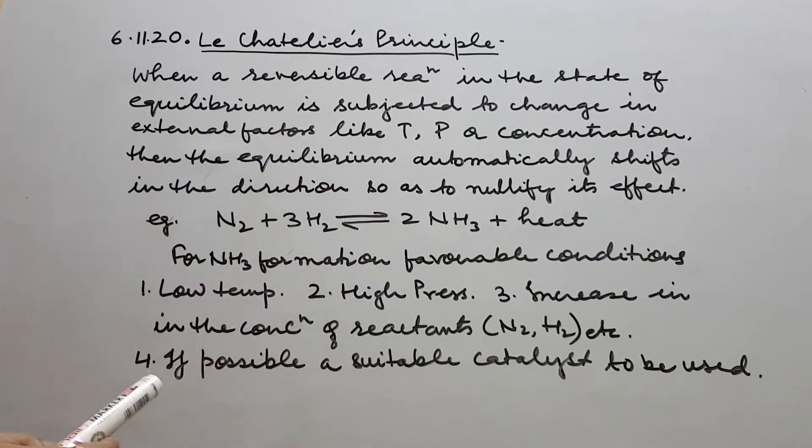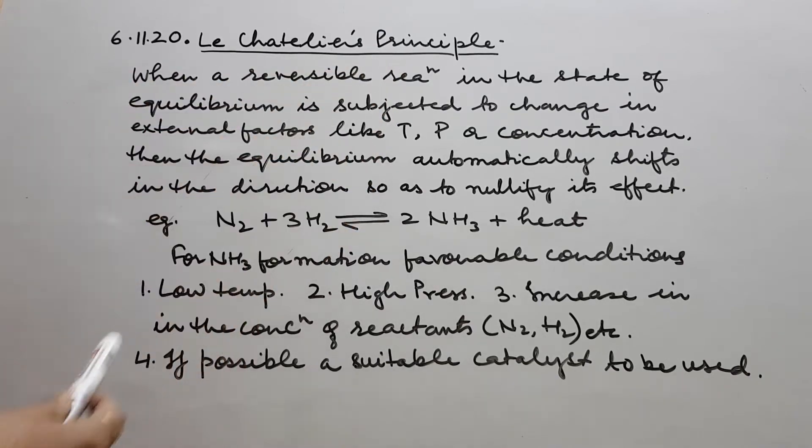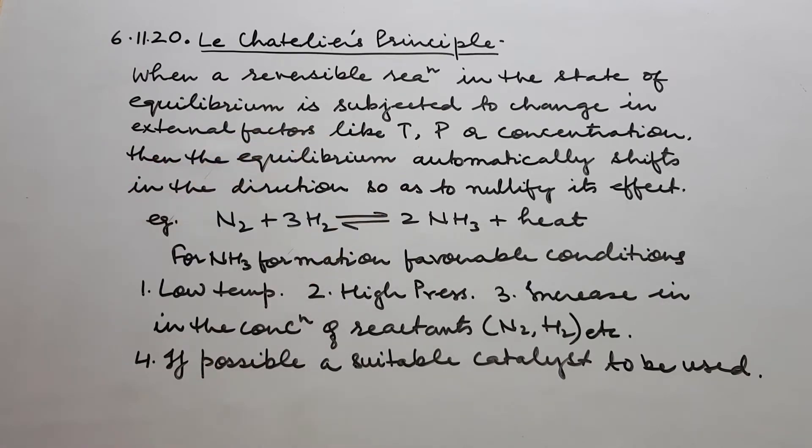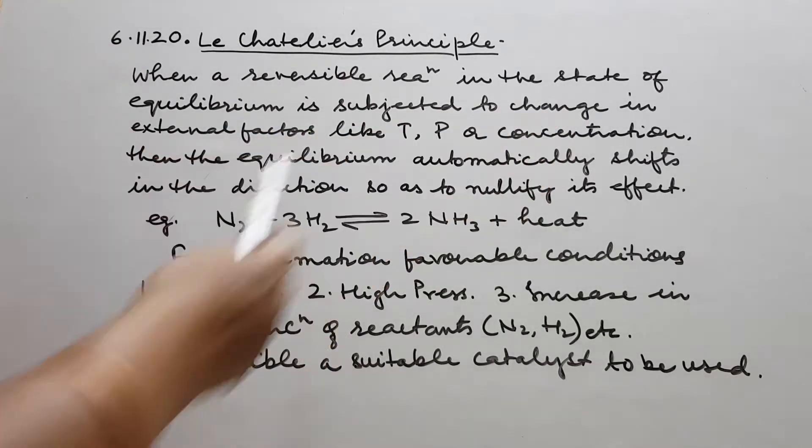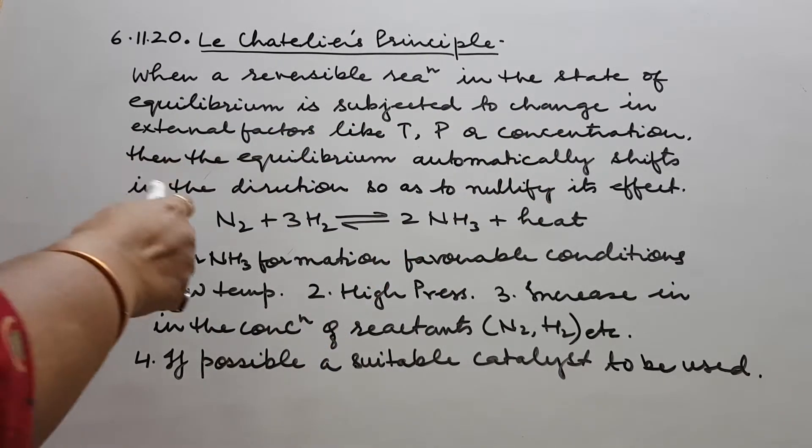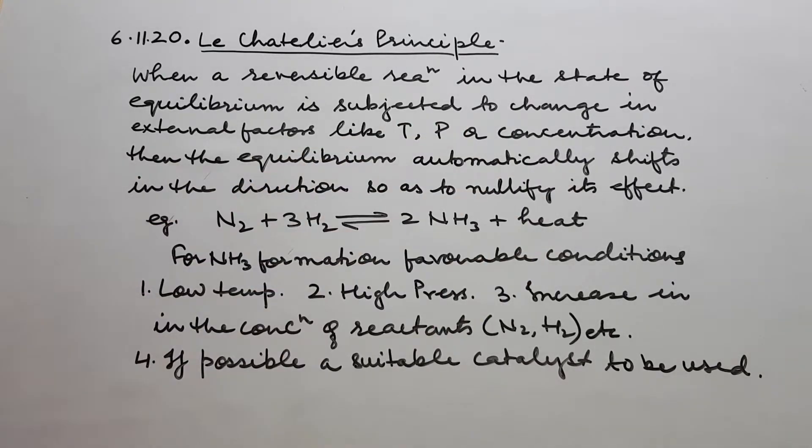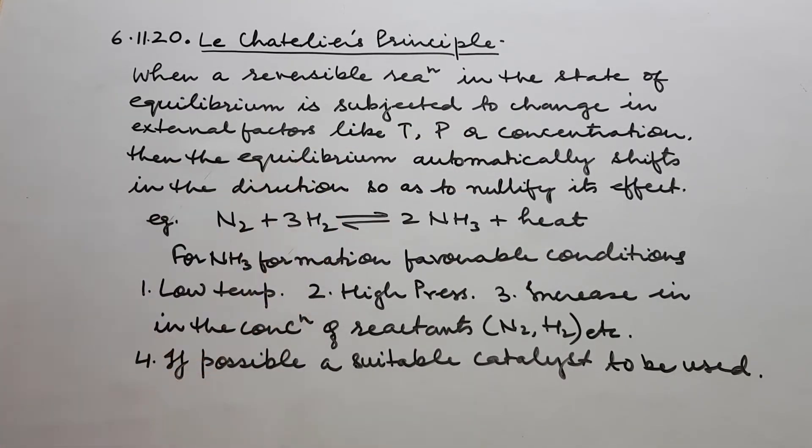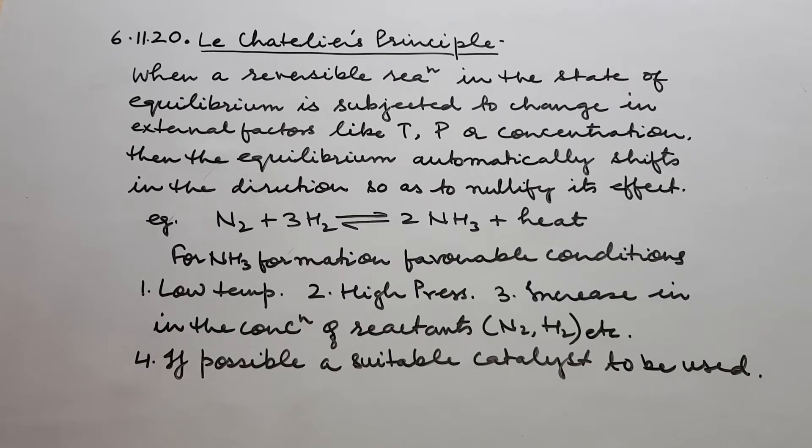Le Chatelier's Principle: When a reversible reaction in the state of chemical equilibrium is subjected to change in external factors like temperature, pressure or concentration, then the equilibrium automatically shifts in the direction so as to nullify its effect.